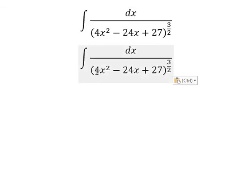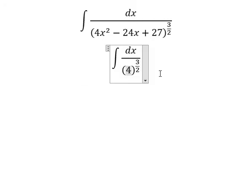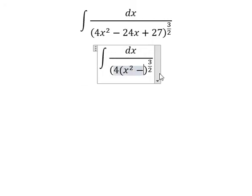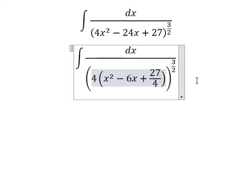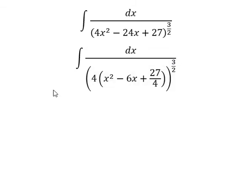So we need to do factorization by number 4 in here. So we will have x square minus 6x plus 27 over 4. Now we have number 4 to the power of 3 over 2. We will have number 8 outside in here.